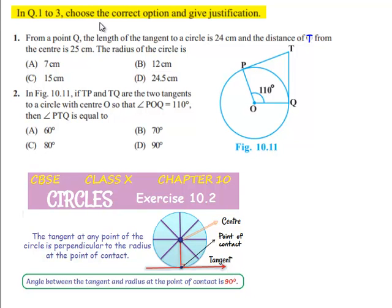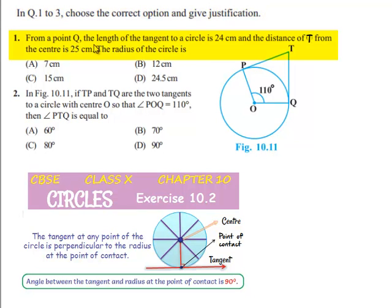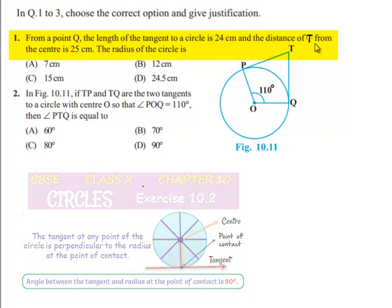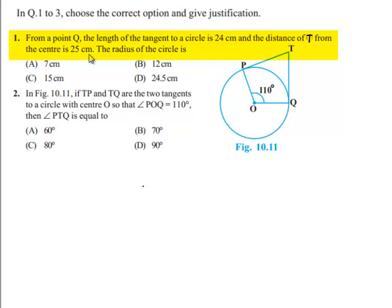In question number 123, choose a correct option and give justification. First question: from a point Q, the length of the tangent to the circle is 24 cm and the distance of Q from the center is 25 cm. Find the radius of the circle.